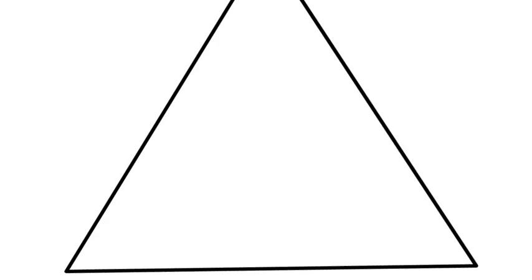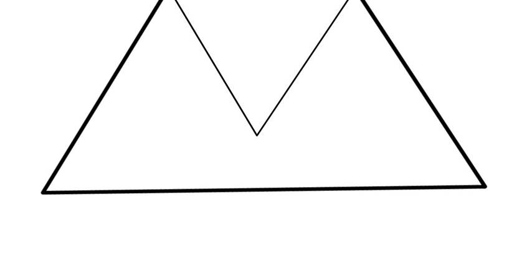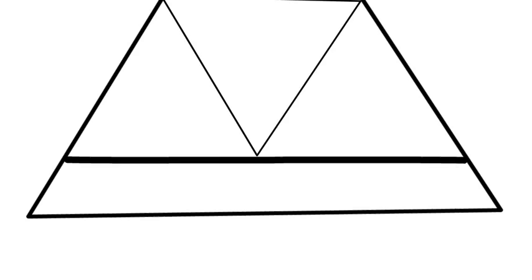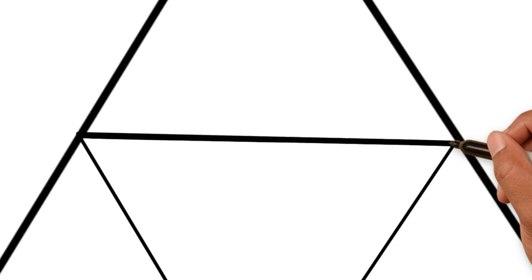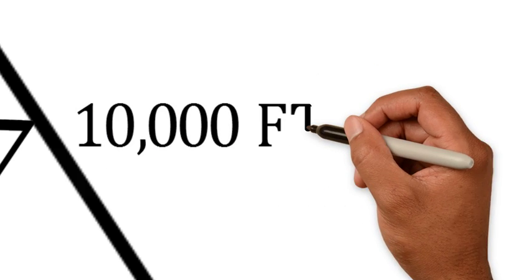So first we're going to draw our triangle. And then what you're going to have to draw is an upside down triangle within the bigger triangle. The top line of this upside down triangle is going to represent 10,000 feet MSL for us. So there's airspace above and below 10,000 feet MSL.